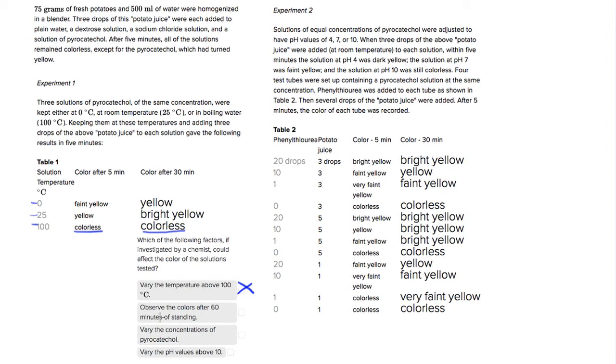Choice two, observe the colors after 60 minutes of standing. That's probably a good thing to do because in both experiments we look at them after five and 30, and this is the same for experiment two. So it would probably be pretty useful to look at them after an hour because maybe the colors will fade or maybe they'll get darker.